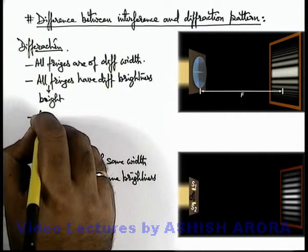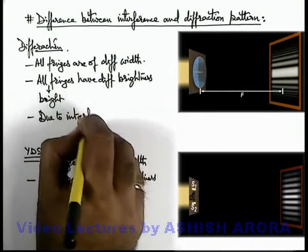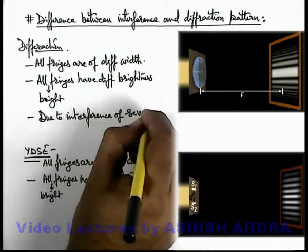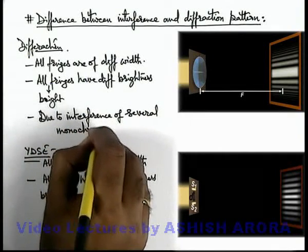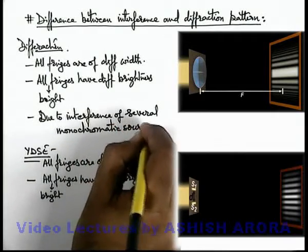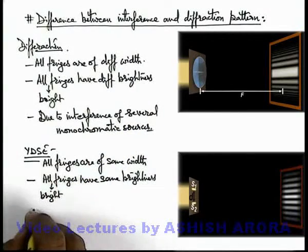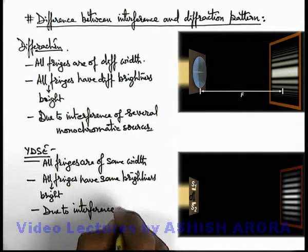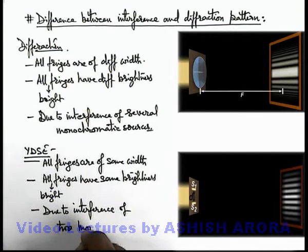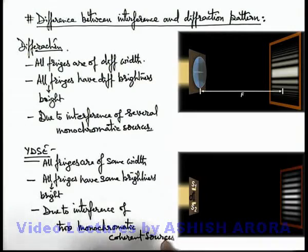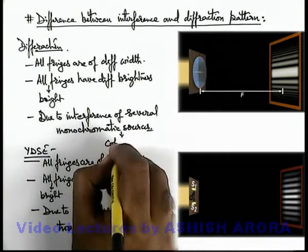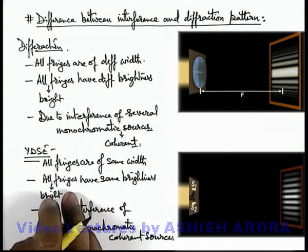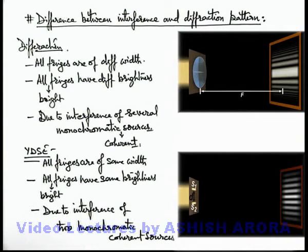This diffraction pattern is obtained due to interference of several monochromatic coherent sources — here, 'several sources' refers to several wavelets which are present within the slit. In the case of YDSE, the pattern is obtained due to interference of 2 monochromatic coherent sources. Both sets of sources are coherent because they are produced by the same light incident on the slit plane. So these are the fundamental differences between the diffraction pattern and the Young's double slit experiment interference pattern.